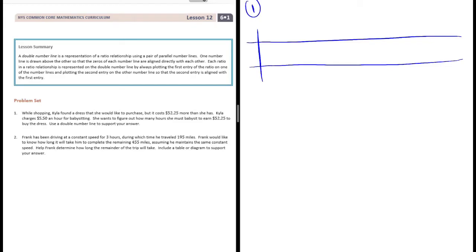We know that she makes $5.50 an hour, so for one hour she makes $5.50. Let's work off of that. Two hours she would make $11. Three hours she would make $11 plus $5.50, which would be $16.50. Four hours she's going to make $16.50 plus $5.50, which would be $22.